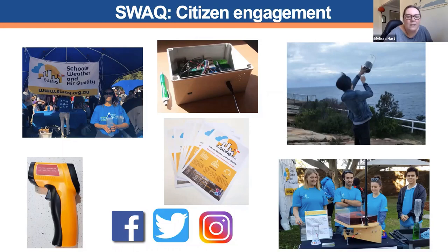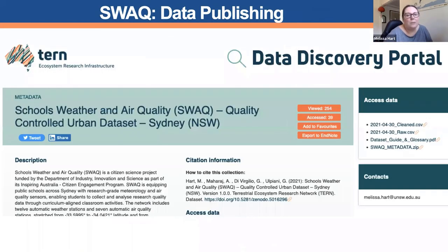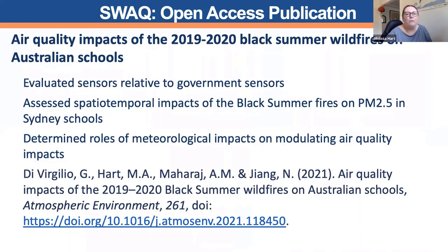Linking to the research, the data is now being published and is available on Tern. We have one publication out now that looked at air quality impacts of the Black Summer wildfires on Australian schools, and we've got a couple of others in review at the moment. We hope that people are using this for research as much as possible and are always happy for others to use the data and for more research to come from it.